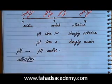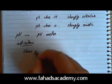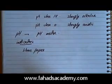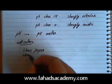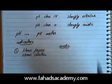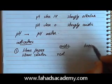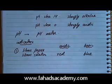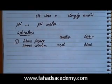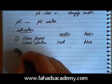Indicators tell us whether a solution is acidic or alkaline. The first indicator is litmus — either litmus paper or litmus solution. When litmus is added to an acidic solution, it turns red, and when added to a basic or alkaline solution, it turns blue. So if the color changes to red the solution is acidic, and if it changes to blue the solution is basic.